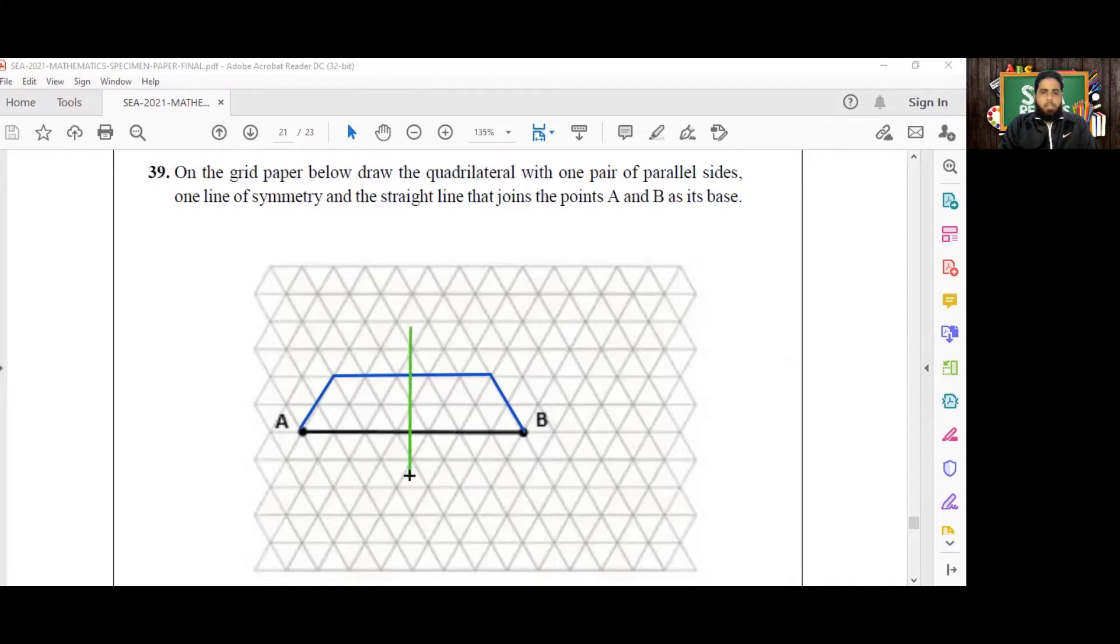One line of symmetry and two parallel sides, or one pair of parallel sides. That is, this side and this side are parallel to each other, and a straight line joining A and B is its base. So this is really referred to as an isosceles trapezium.